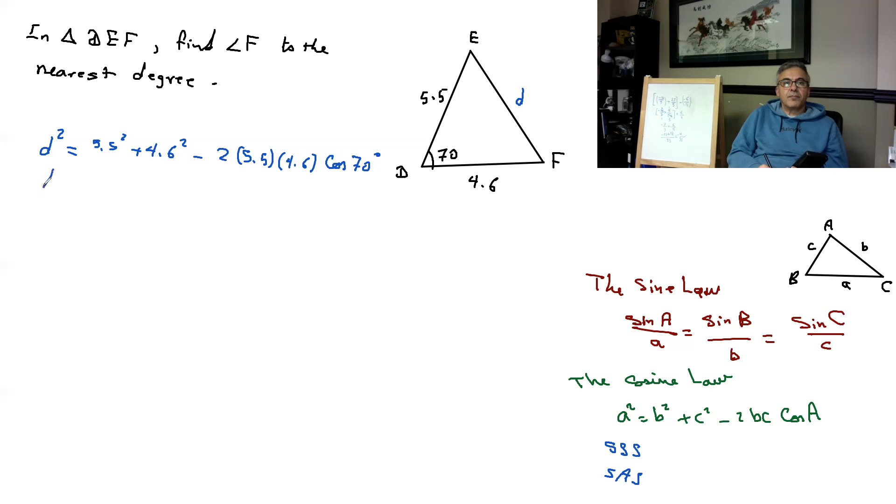D squared equals 34.1, and therefore D will be the square root of 34.1. The answer is 5.8, so I'm going to stick to one decimal. D equals 5.8.